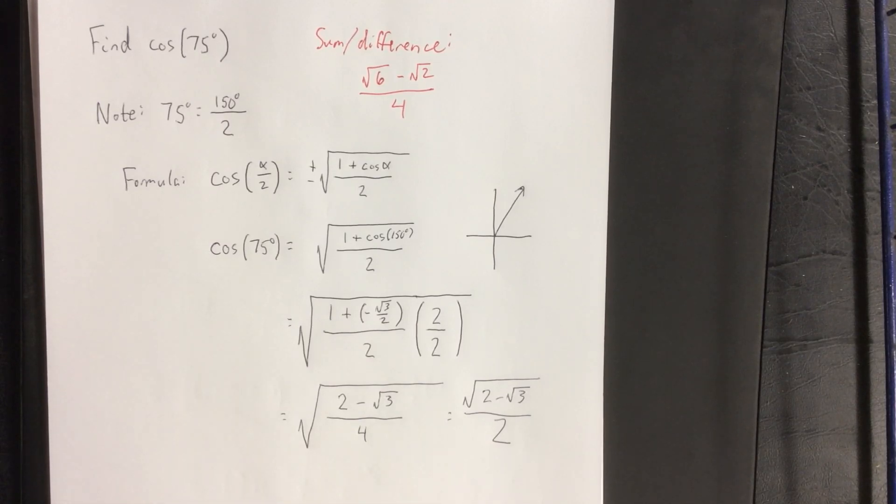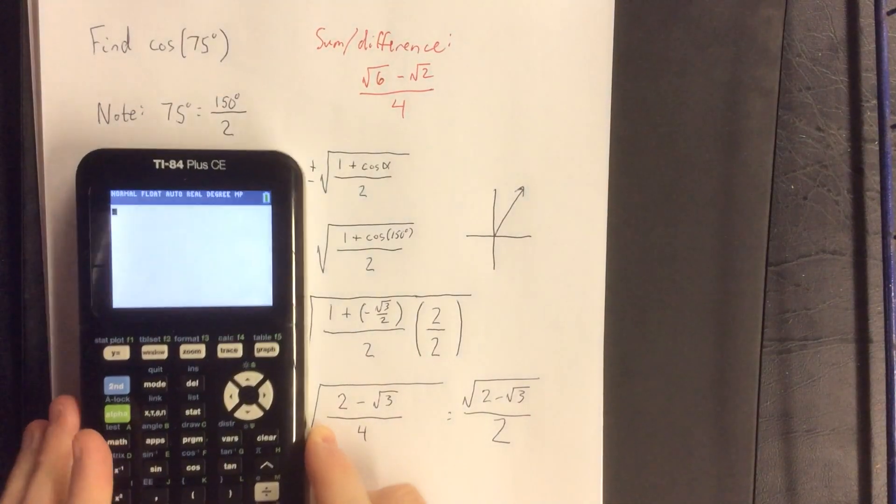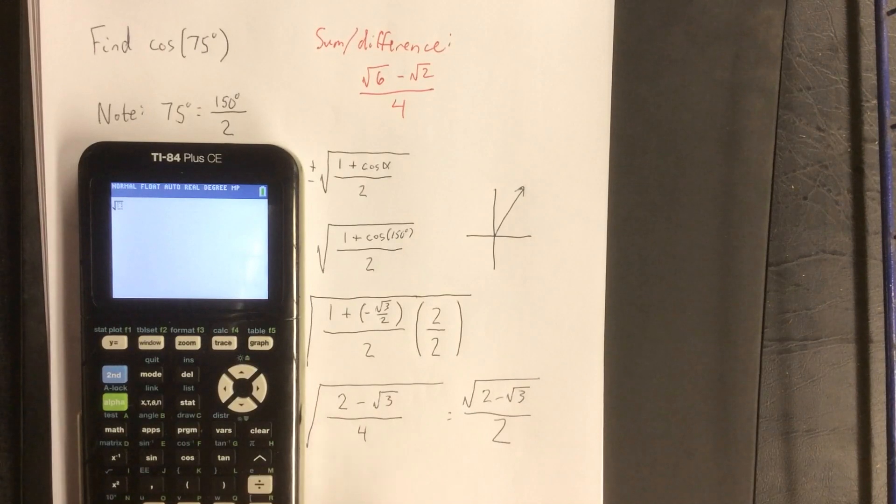So that's kind of disturbing to me. But what the heck, let's go for it anyway. Let's take the square root of 2 minus the square root of 3, and put that whole thing over 2.